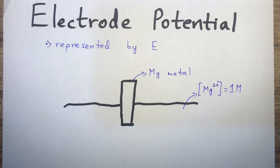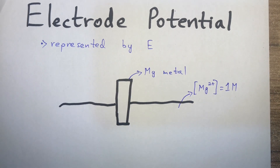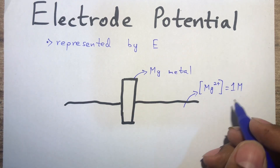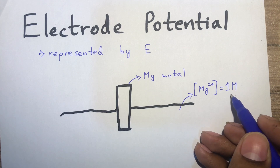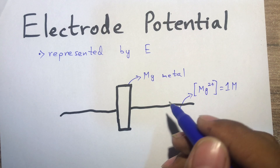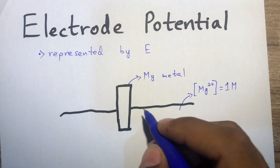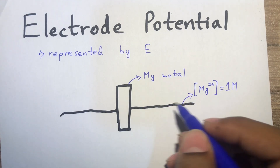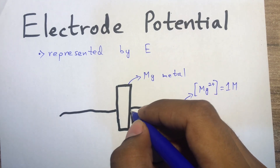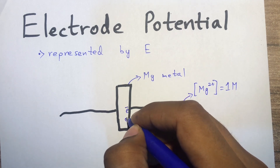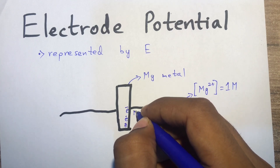This is the second video on electrochemistry and the first topic is electrode potential, represented by E. For example, if we have a metal rod - let's say magnesium - dipped into a solution of magnesium ions at 1 molar per dm³, the magnesium metal oxidizes to magnesium ions. These ions enter the aqueous medium, leaving electrons on the metal rod.